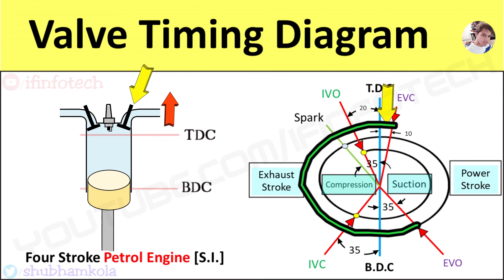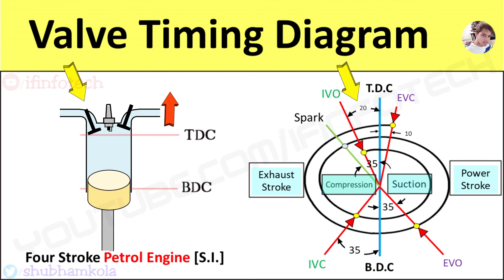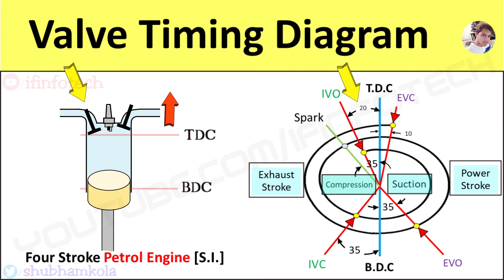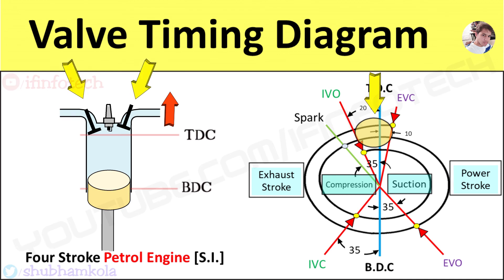The exhaust valve closes at an angle of 10 degrees after the TDC position of the piston. The inlet valve opens at an angle of 20 degrees before the TDC position of the piston for proper intake of the air-fuel mixture, which provides cleaning of remaining combustion residues in the combustion chamber. So there is 30 degrees of valve overlap between the inlet and exhaust valves before the new cycle starts.